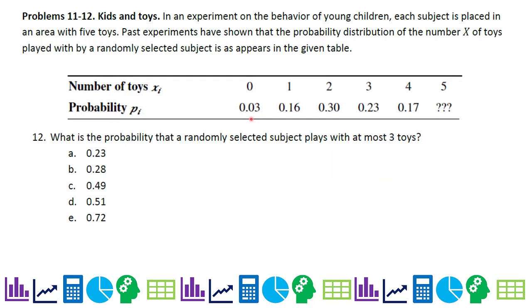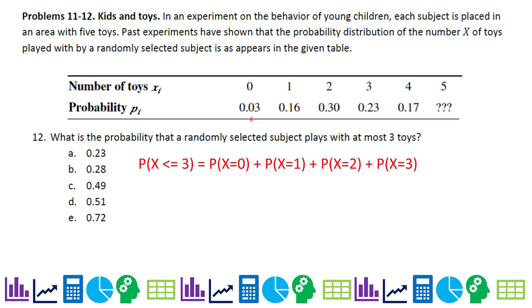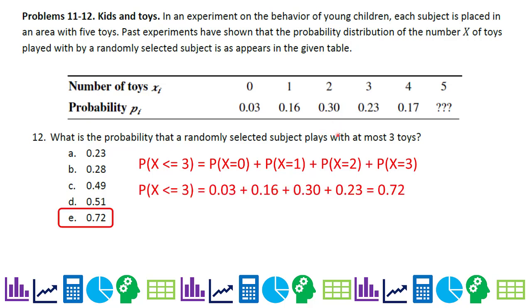Problem 12: what is the probability a randomly selected subject plays with at most three toys? We need P(x ≤ 3), which means adding probabilities for x = 0, 1, 2, and 3. Each of those outcomes counts as 'at most three toys.' Add those values together to get the answer.